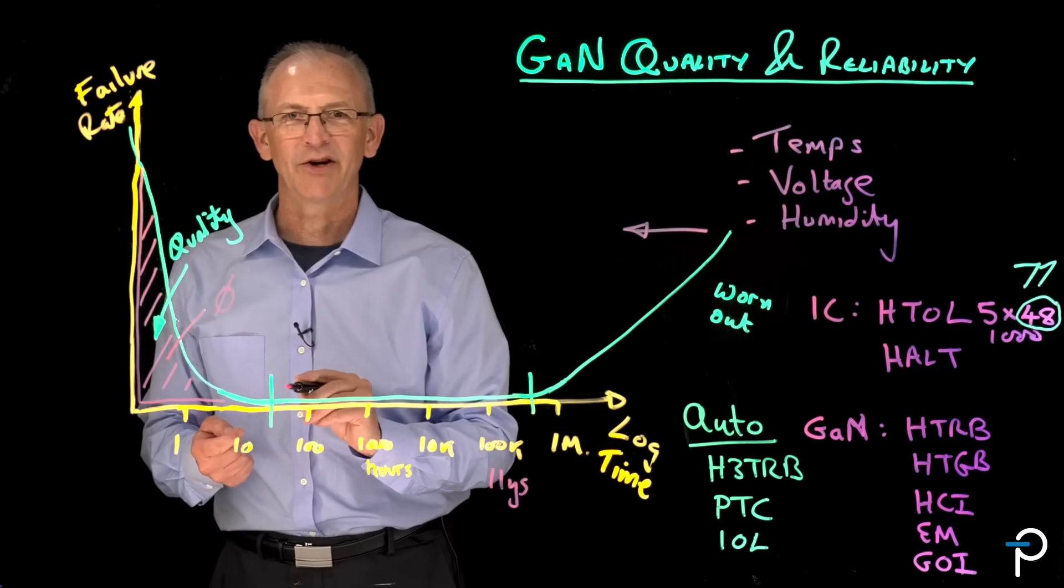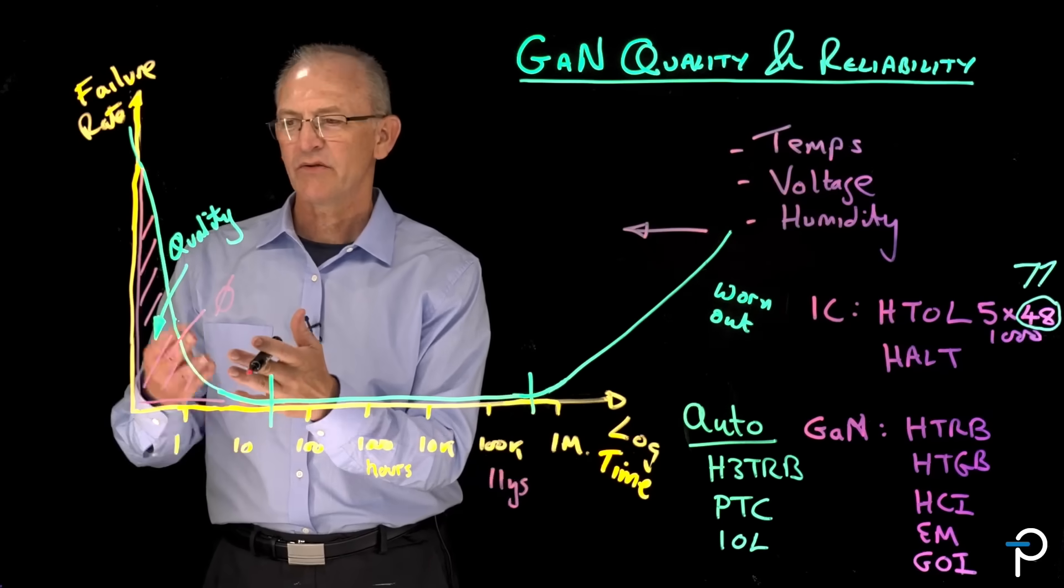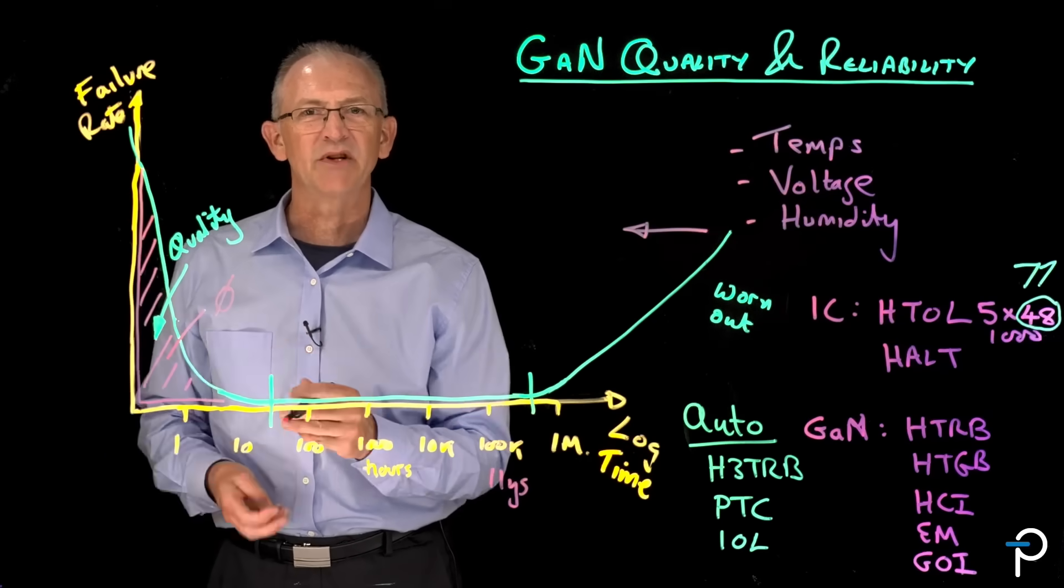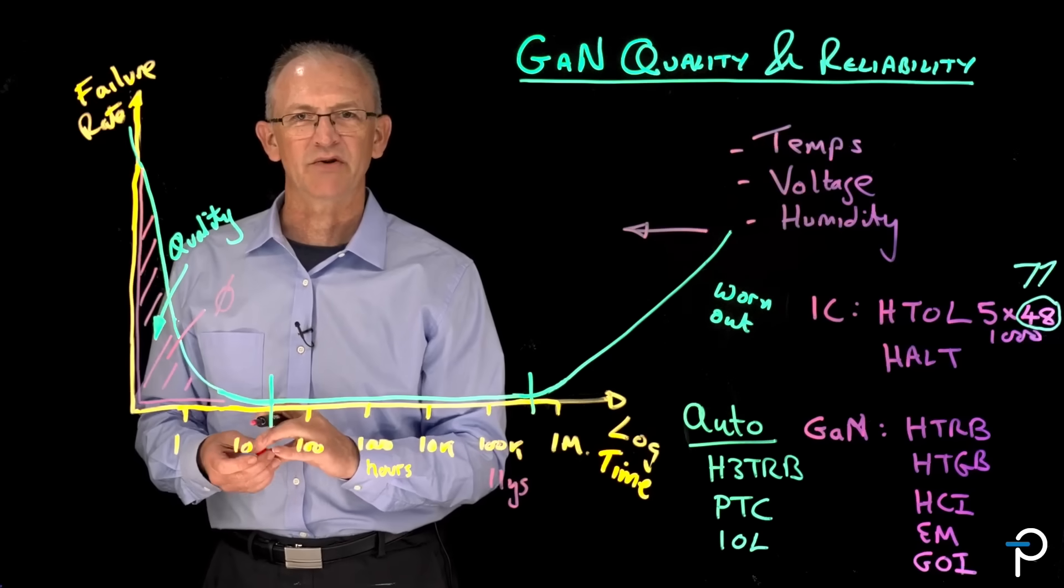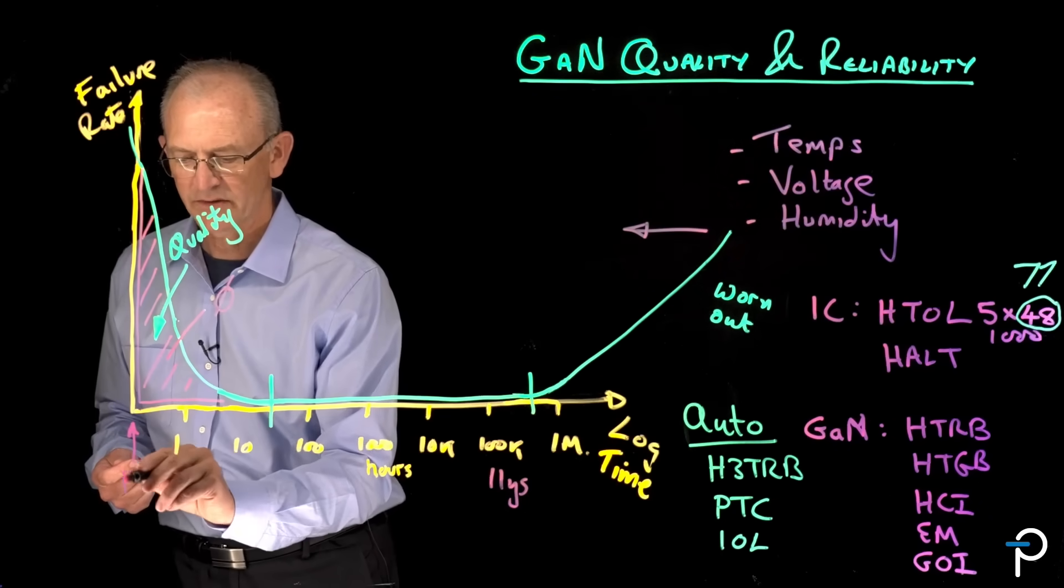And so our curve actually looks like this, which would be a very uncomfortable bath. But how do we do that? How do we make a essentially perfect product stream?